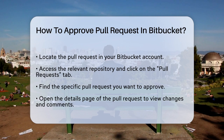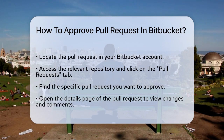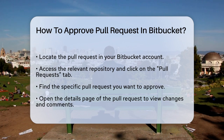First, you need to locate the pull request that you want to approve. You can do this by going to your Bitbucket account, finding the relevant repository, and clicking on the Pull Requests tab in the left sidebar. Here, you'll see a list of all the pull requests, including the one you're interested in.